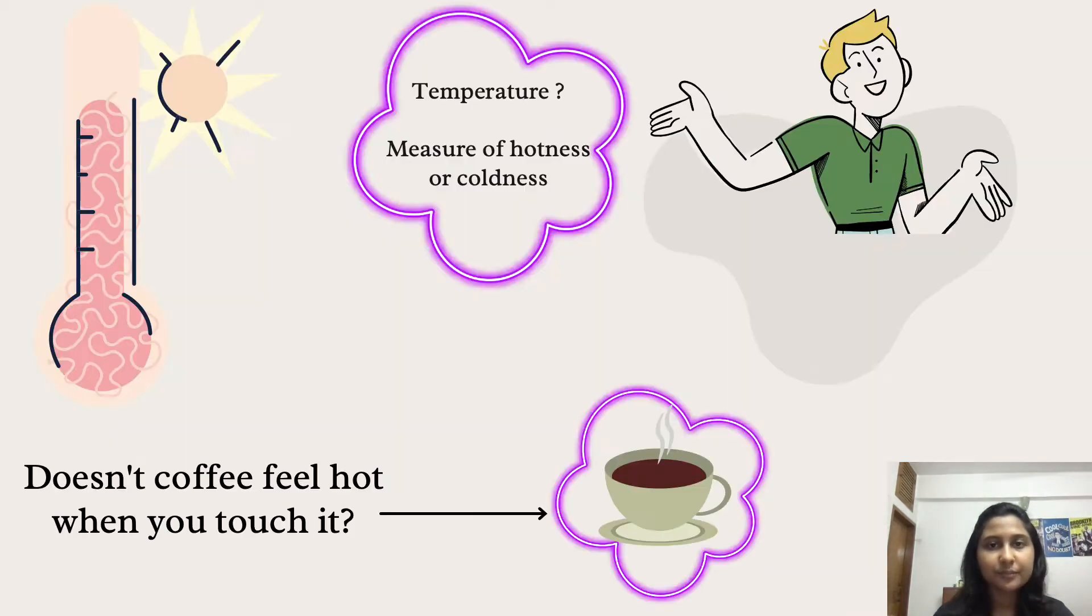When talking about heat, one thing comes into our mind for sure and that is temperature. The direction of energy flow is from the substance of higher temperature to the substance of low temperature. Heat and temperature are often used interchangeably but this is incorrect.